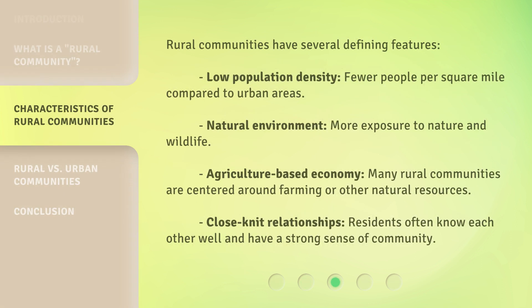Rural communities have several defining features. Low population density: fewer people per square mile compared to urban areas. Natural environment: more exposure to nature and wildlife. Agriculture-based economy: many rural communities are centered around farming or other natural resources. Close-knit relationships: residents often know each other well and have a strong sense of community.